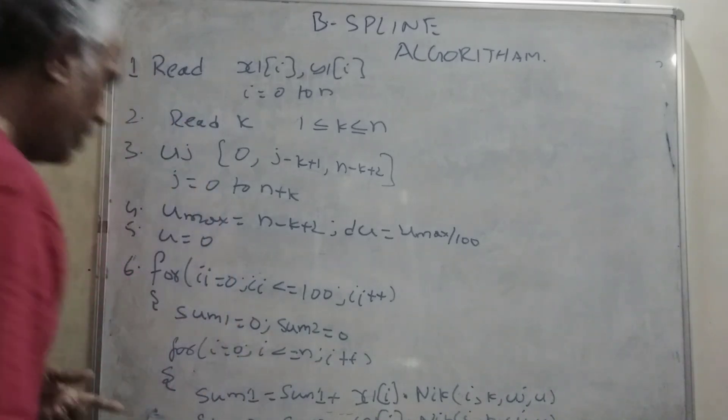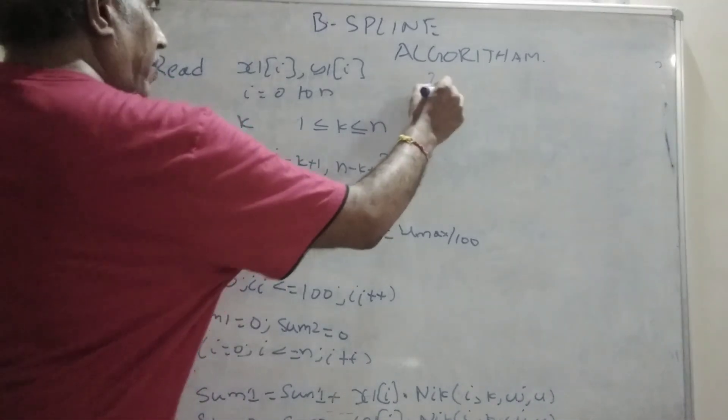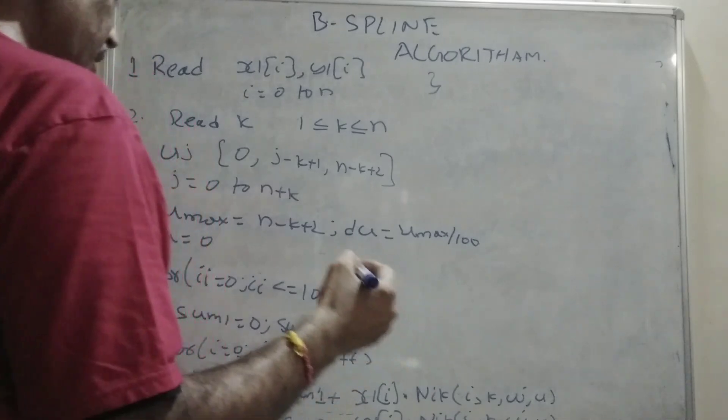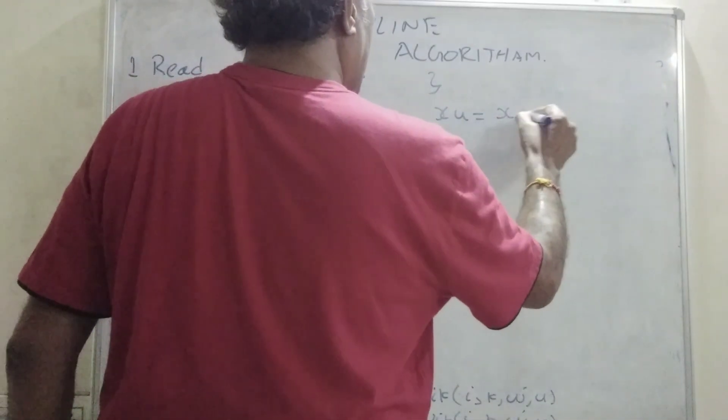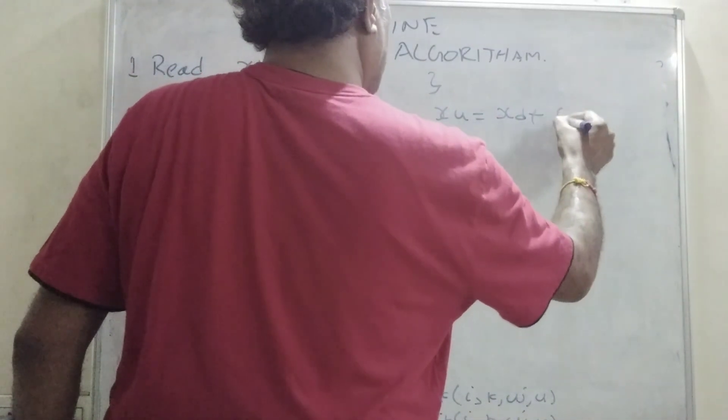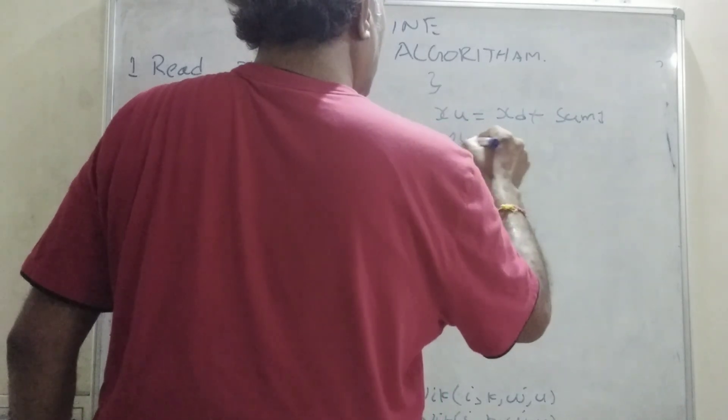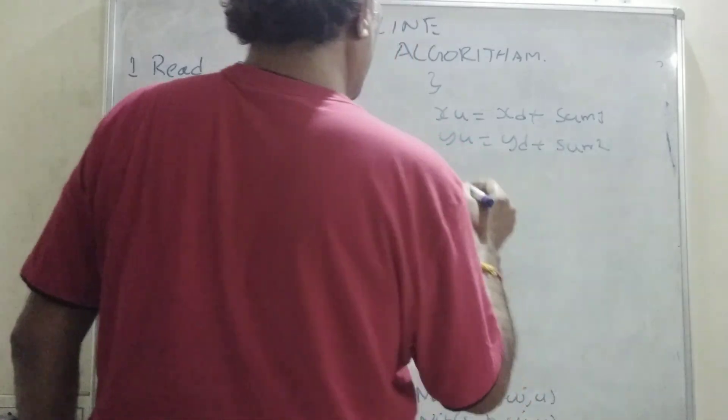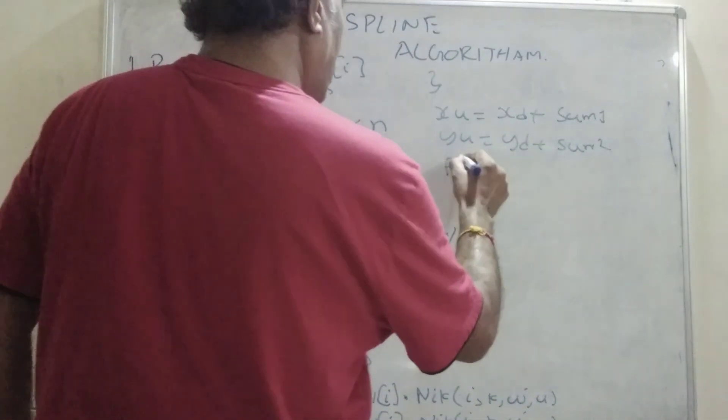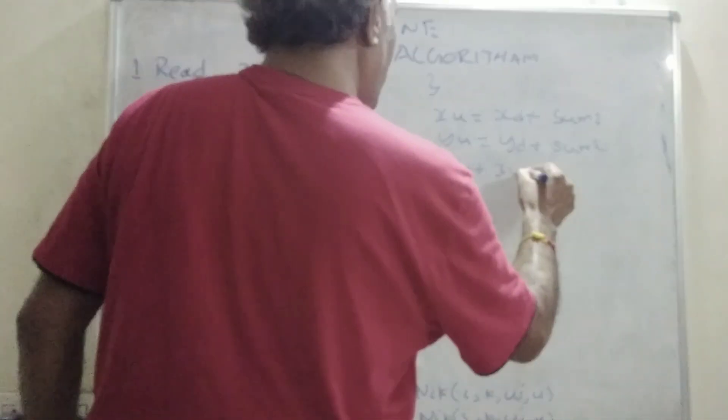So, there are two equations, and here, we will be completing this work, and x(u) is equal to sum 1, y(u) is equal to sum 2. And plot x(u), y(u).